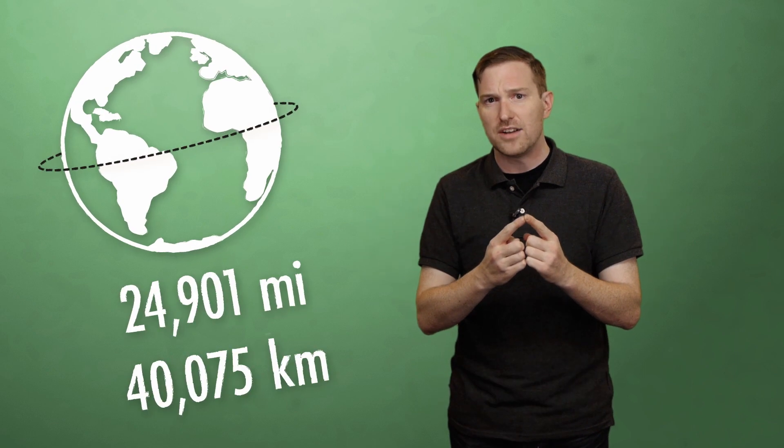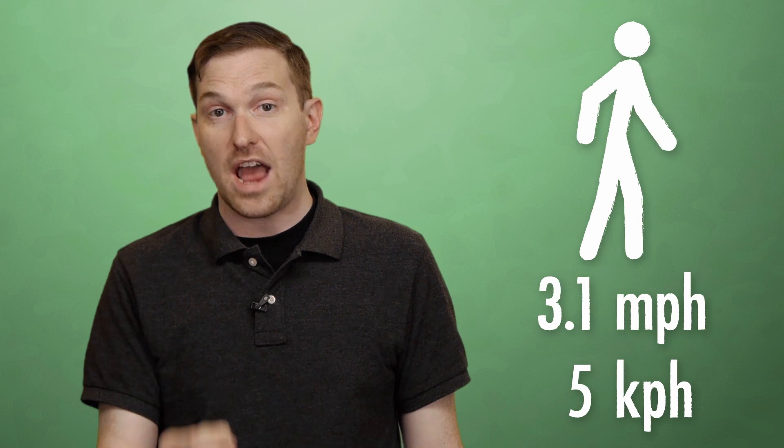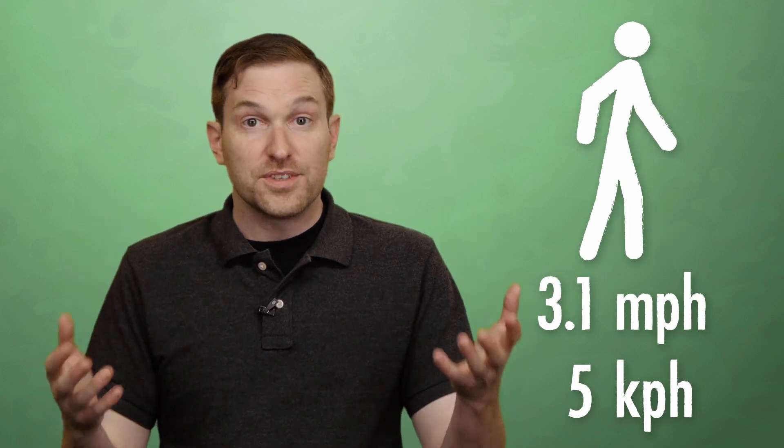There are a couple of different ways we could look at this, so let's start with some math. Picture the Earth, imagine the Earth, it's about 24,901 miles across at the equator. So if you're walking, we have to admit that people walk at different speeds. So for the sake of argument, let's assume an average of 3.1 miles per hour for the adult human being.